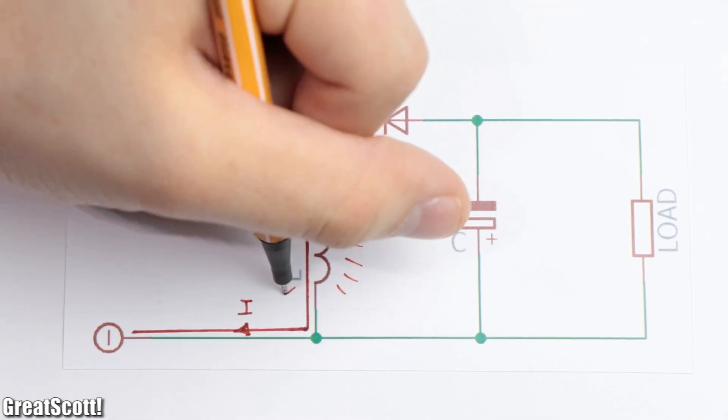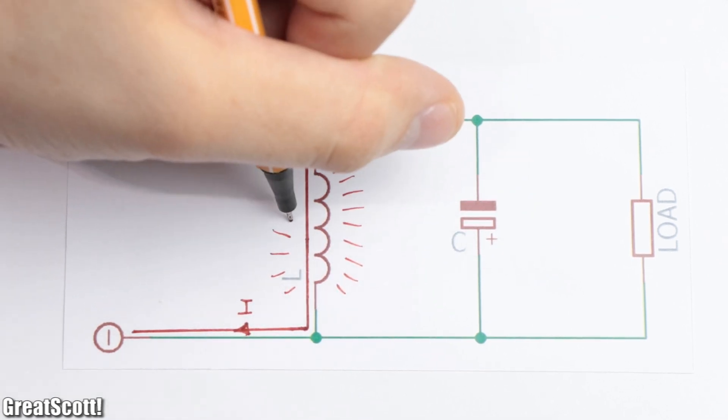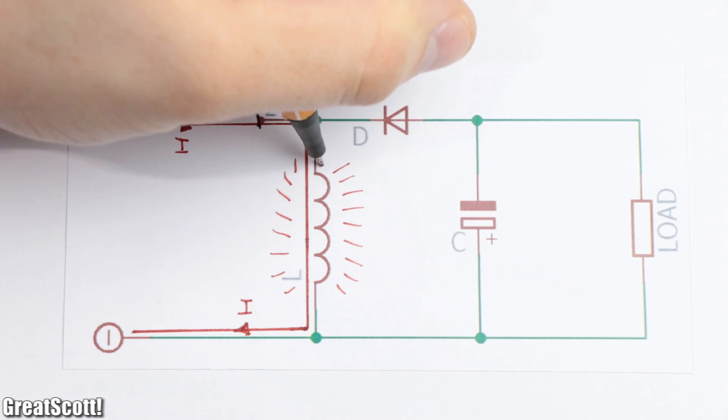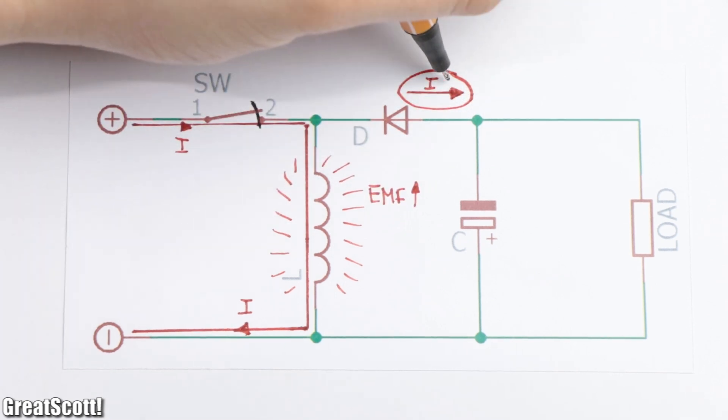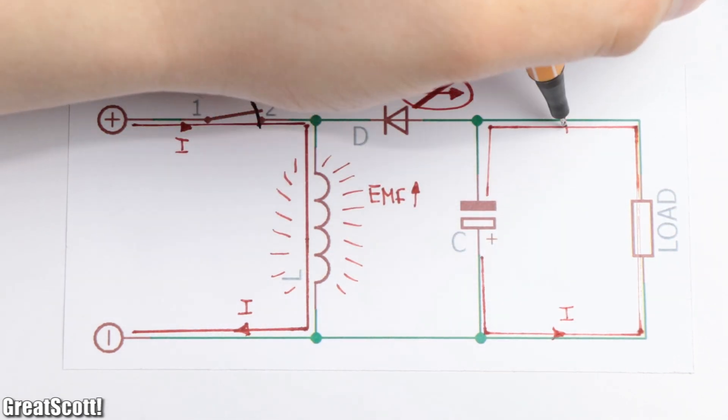The coil builds up its electromagnetic field and thus stores energy. While that is happening, the diode prevents current from flowing to the capacitor, and the capacitor itself supplies its previously stored energy to the attached load.